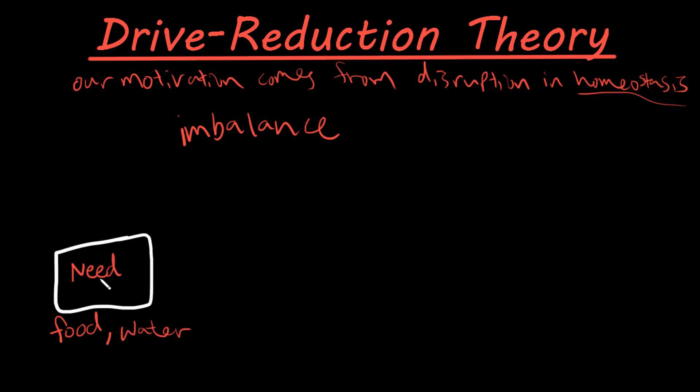So this imbalance creates a need and so what happens next is that we have a drive. So the drive part of drive reduction theory. So our brain creates this drive. So what would our drive be in this case when we need food and water? It would be our hunger and our thirst. So we have some need due to an imbalance in our body, and this in turn creates a drive from the brain so this is going to drive us to do something about it.